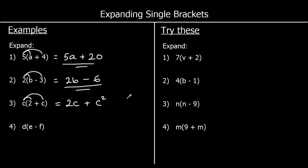If we have a number times itself, we can say that that number is squared. So 4 times 4 is the same as 4 squared, and 5 times 5 is 5 squared. So c times c is c².